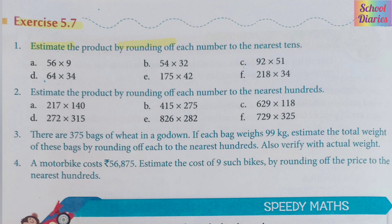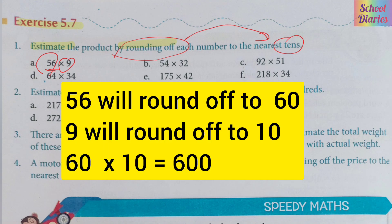First of all, you will round off the number. Here we round off to the nearest tens, meaning you round off to the nearest 10. So we will round off 56 and write down 60, and 9 rounds off to 10. Now we multiply 60 and 10, so the answer will be 600. All of you have to do this.